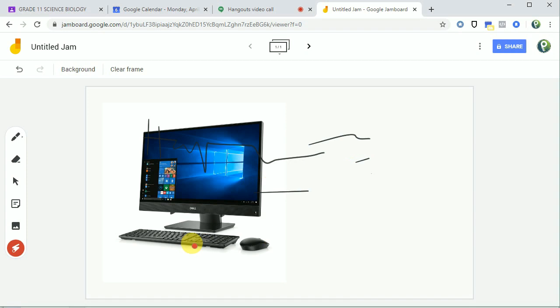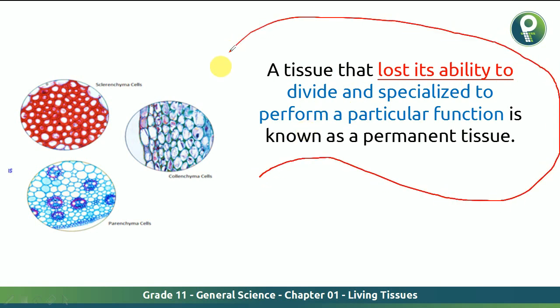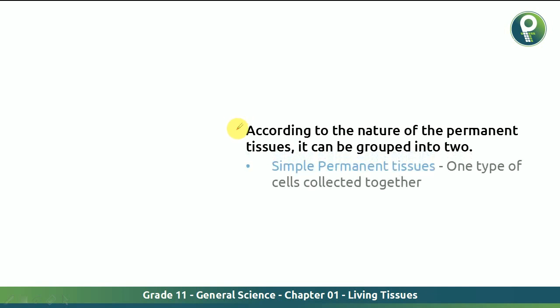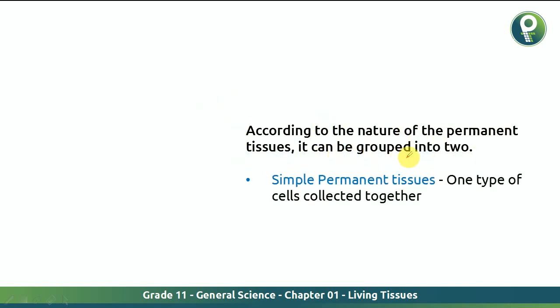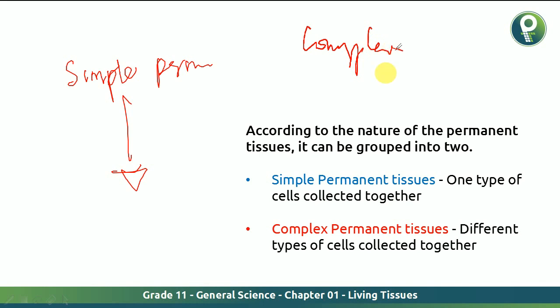This is a new type of Dell machine with a beautiful LCD — these kinds of things can be explained to students then and there. For example, a tissue that lost its ability to divide and specialize — the subject of permanent tissues in Grade 11 General Science. The nature of permanent tissues can be grouped into two. You can write with the digital pen to explain clearly — simple and complex — see how nice you can do all these explanations with the screen.